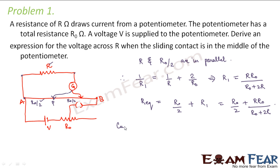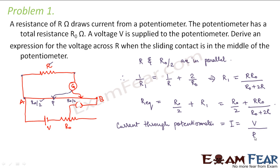Now what will be the current through the potentiometer? We know that the voltage supplied to the potentiometer is V. So the current through the potentiometer I will be equal to V divided by that equivalent resistance of the circuit. Therefore I = V / [R0/2 + R·R0/(R0 + 2R)]. This will be the current flowing through the potentiometer.